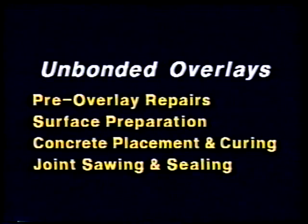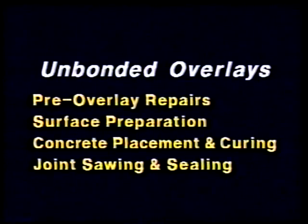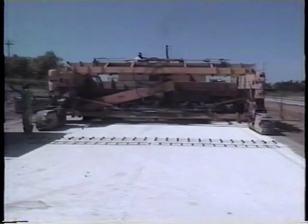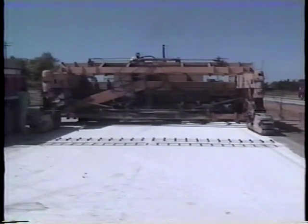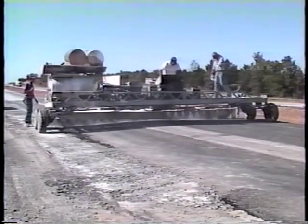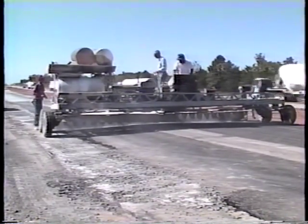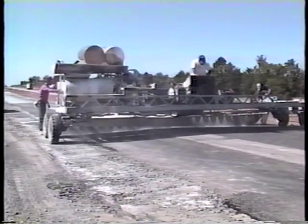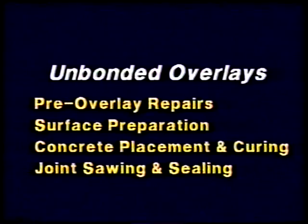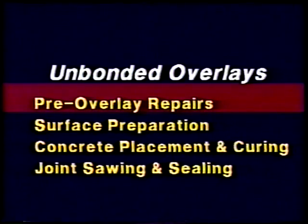Now let's look at unbonded concrete overlays. These have been used successfully to rehabilitate extensively deteriorated concrete pavements and bituminous pavements. In contrast to bonded overlay construction — where achieving bond between the overlay and the base concrete is a major concern — an unbonded overlay separates the two pavement layers to prevent reflection cracks. This is accomplished by placing a separation layer between the overlay and the base pavement, isolating the overlay from movements of the underlying pavement and reducing the likelihood of reflection cracking. This also eliminates the need for extensive pre-overlay repair, which is the principal advantage of unbonded concrete overlays.